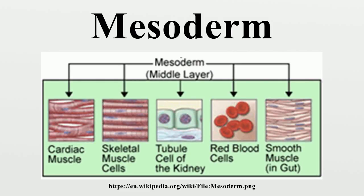The mesoderm forms mesenchyma, mesothelium, non-epithelial blood cells and coelomocytes. Mesothelium lines coeloms. Mesoderm forms the muscles in a process known as myogenesis, as well as septa and mesenteries, and forms part of the gonads. Myogenesis is specifically a function of mesenchyma.